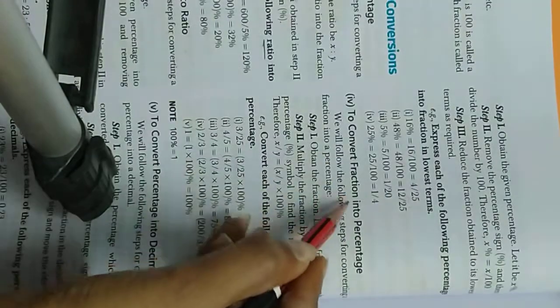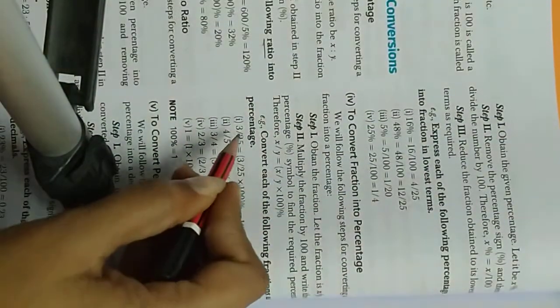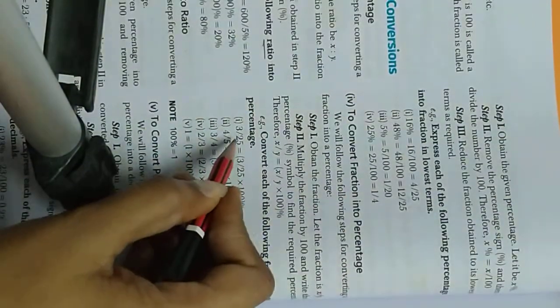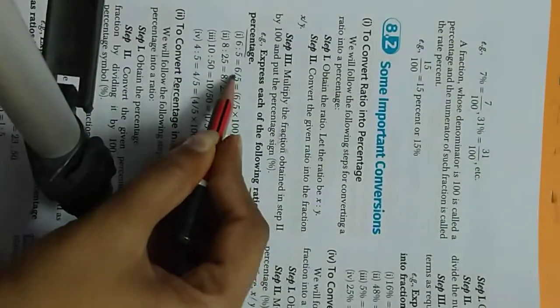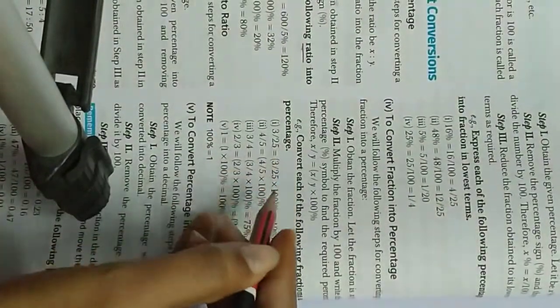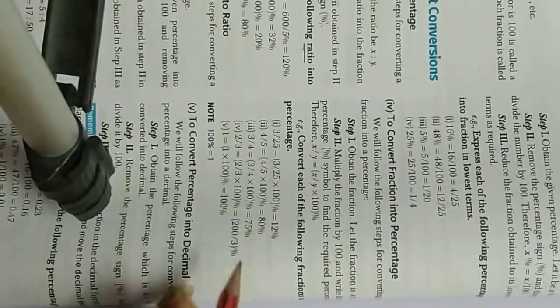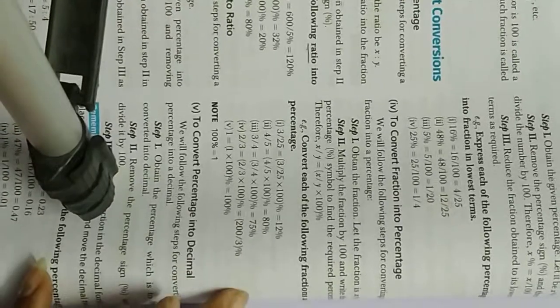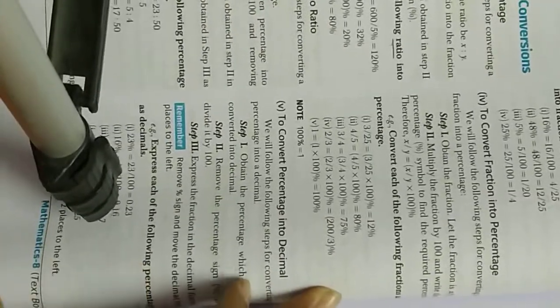To convert a fraction into percentage: jab fraction ko percentage mein convert kiya jata hai — like 3 upon 25 — jis tarah se ratio mein usko pehle fraction mein convert karke, then hundred se multiply karte hai. Yahaan already fraction mein hi hai, to usko hundred se multiply karte hai, and is tarah se percentage mein answer aa jata hai.